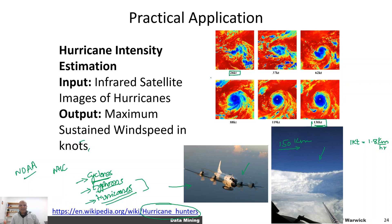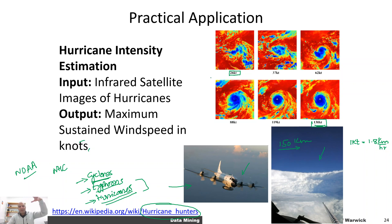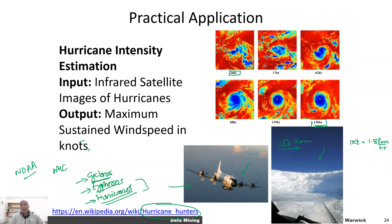Measuring hurricane wind speed by flying planes through them is not overly risky when hurricanes are at sea since there is no debris, but the planes do need to be reinforced and fitted with sensors. At the same time, you don't want to spend that amount of money when you have satellites that can look down on these hurricane systems from space and observe them night and day using infrared imagery.